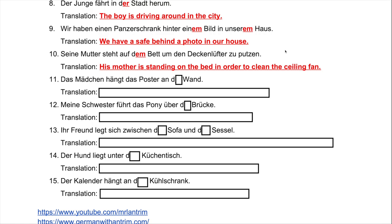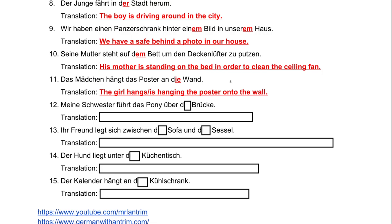Number eleven: 'Das Mädchen hängt das Poster an ___ Wand.' As mentioned at the beginning, if you are hanging something onto a wall, that uses the accusative. 'Wand' is a feminine noun, so we use 'die' in the accusative case. Answer: 'Das Mädchen hängt das Poster an die Wand' — the girl hangs the poster onto the wall.